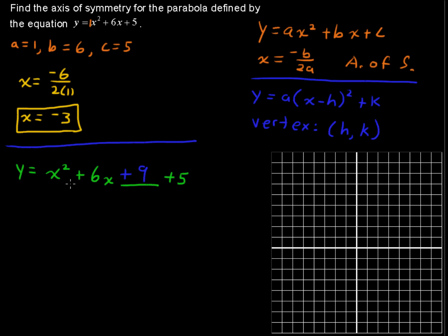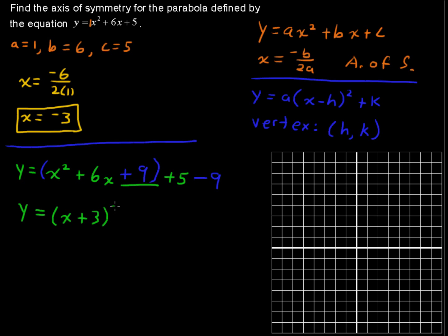We're not really solving an equation here — we're just making this equation fit this form. So we can add 9 and then subtract 9 right after, and that is perfectly fine because what we're doing is adding a net of zero to this side of the equation. Now we partition this part off and rewrite that as y equals the quantity x plus 3, squared, and then 5 minus 9 is minus 4.